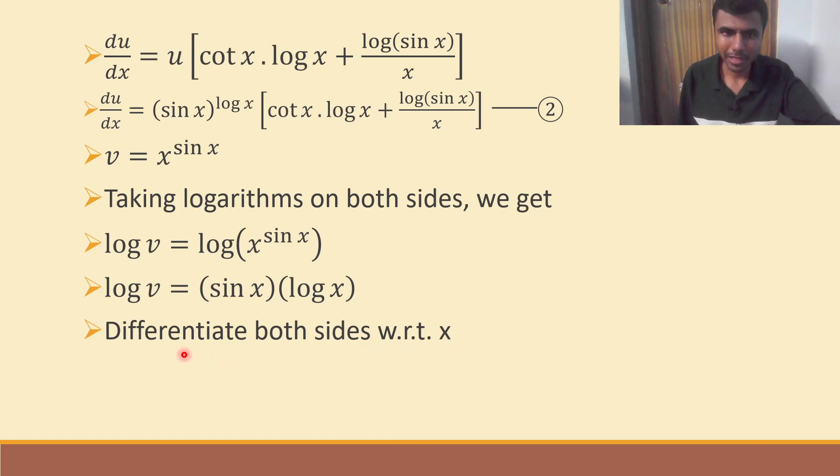Again, same thing. Differentiate both sides with respect to x. Some people write this one as DBSWRT. Please don't do that. WRT is okay. Because it means with respect to, it is understood. But don't make it DBSWRT. Please don't use such short forms. At least write this much. Differentiate both sides. WRT with respect to x is okay.